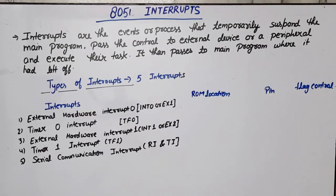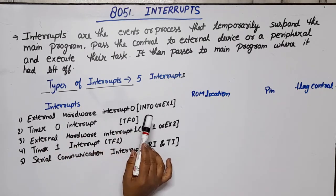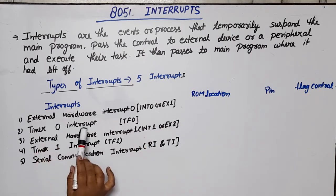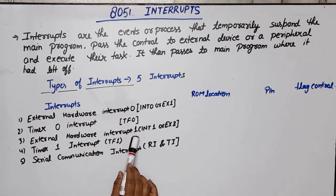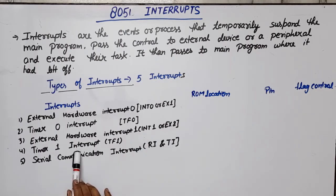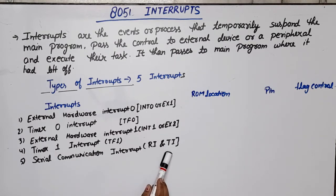There are 5 interrupts available for users in the 8051. The names are: first, External Hardware Interrupt 0 (INT0 or EX1); second, Timer 0 Interrupt (TF0); third, External Hardware Interrupt 1 (INT1 or EX2); fourth, Timer 1 Interrupt (TF1); and fifth, Serial Communication Interrupt, which includes RI (receiver interrupt) and TI (transmitter interrupt).